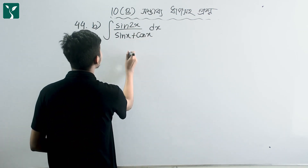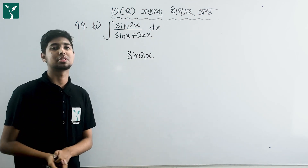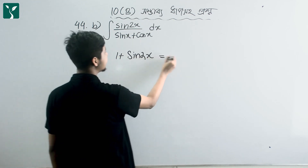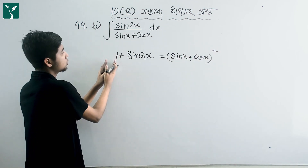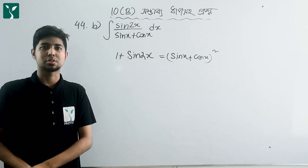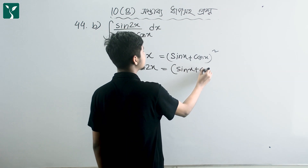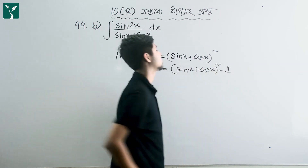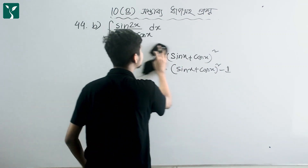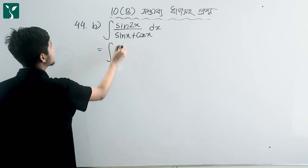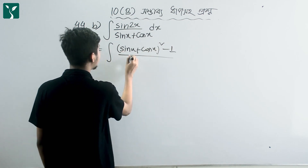We need to rewrite sin 2x. We have to express 1 plus sin 2x as sin x plus cos x whole squared. Because sin x plus cos x whole squared equals 1 plus 2 sin x cos x, which equals 1 plus sin 2x. So we write sin 2x as sin x plus cos x whole squared minus 1.